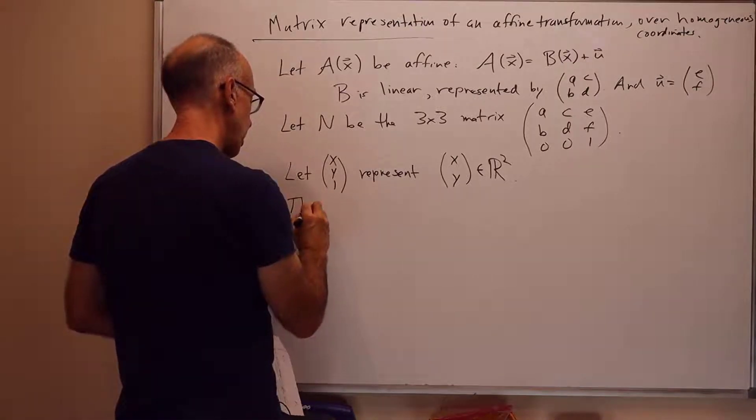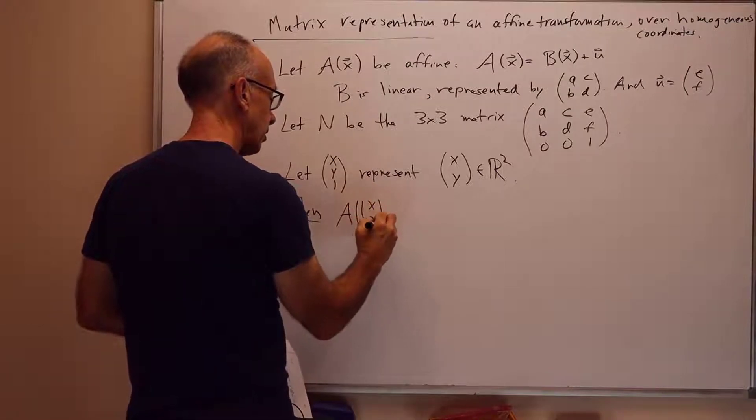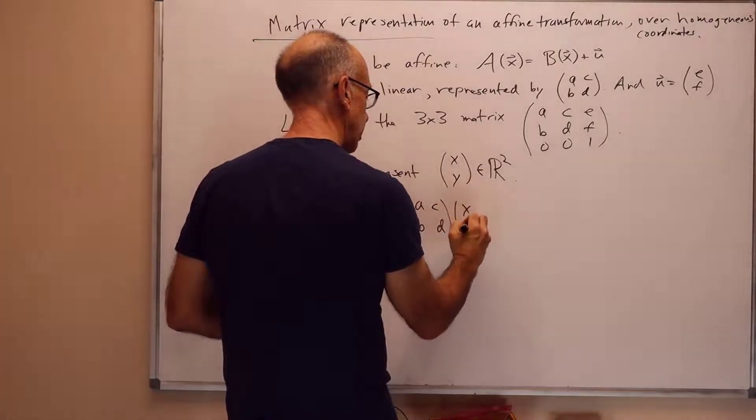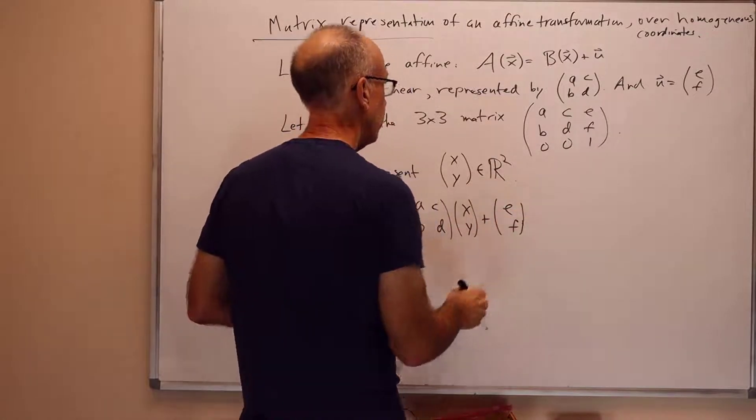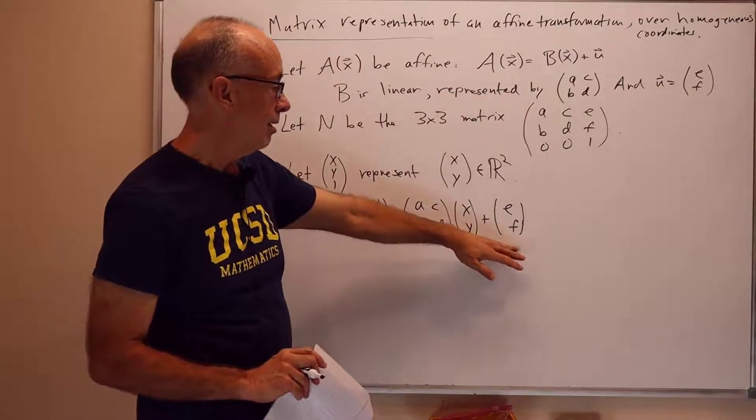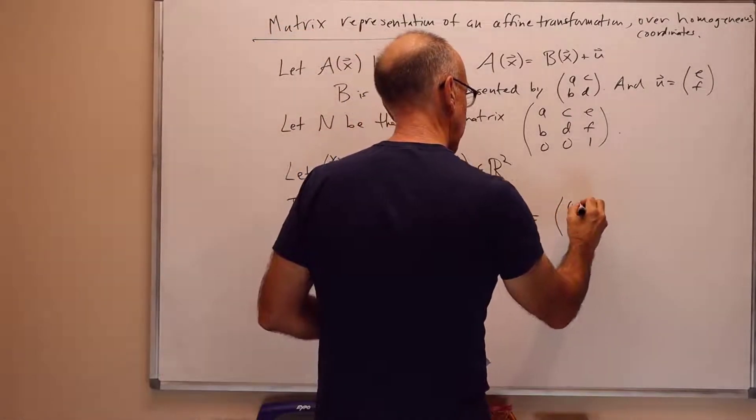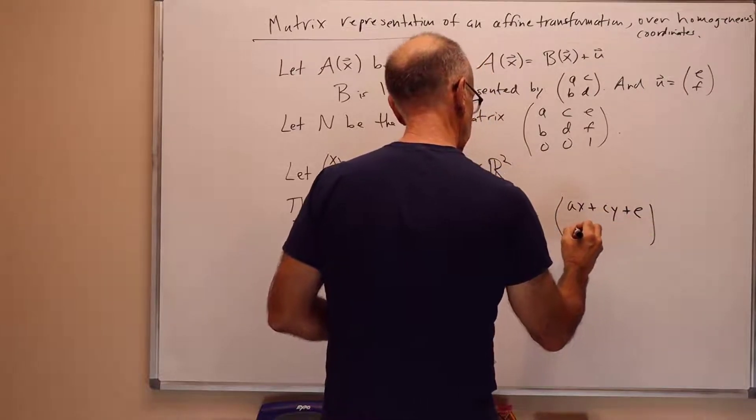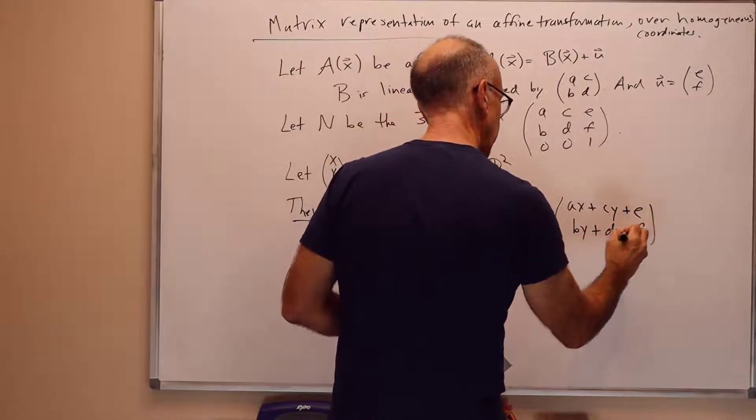And so, if we take the transformation A, A applied to the column vector x, y, it's equal to ABCD times x, y plus EF. In other words, A was Bx plus U. B is represented by the 2 by 2 matrix ABCD. U is the column vector EF.